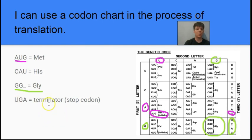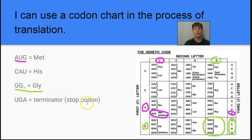Finally, we should mention what we call terminator or stop codons. UGA is an example of a stop codon — when read by the ribosome, it signals to the ribosome that it should stop putting together amino acids. So this is going to be the end of the amino acid chain.